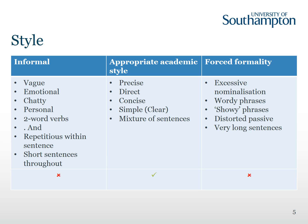So what does appropriate academic style look like? It should be precise, using the exact technical term to communicate your point. It should be direct. It should be concise, not using more words than necessary to make a point. It should be simple in the sense that words should be clear and chosen to communicate the message as clearly as possible, not to show off. And you should use a mixture of sentence lengths — both long and short — to get your point across.